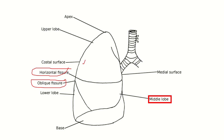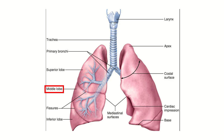Now we have to find out — if we want to remove the middle lobe section, we have to reach it through which direction or through which ribs. In the second picture, right and left lungs are present. Here we can see the middle lobe, upper lobe, and lower lobe. In the case of the left lung, there is only an upper lobe and lower lobe.